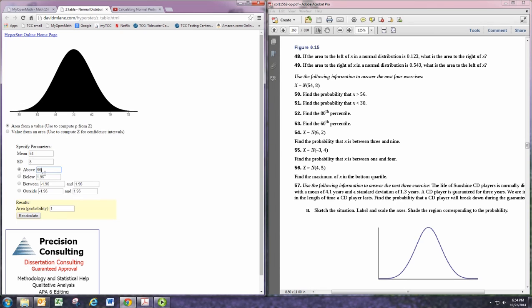Select above, put in 56, and hit recalculate. You have the area given at the bottom, and then a graph showing the area shaded to the right of 56.